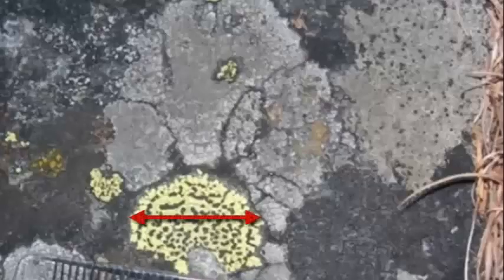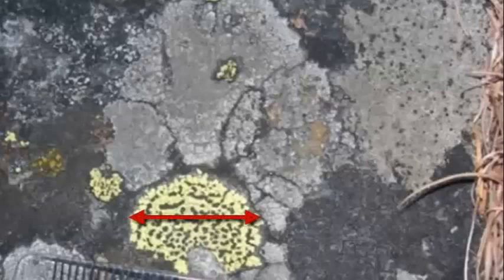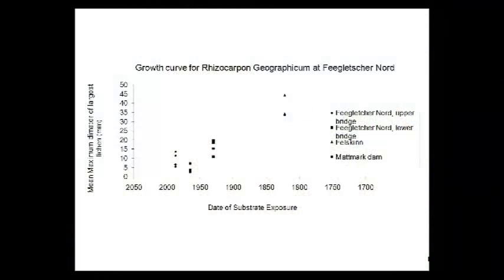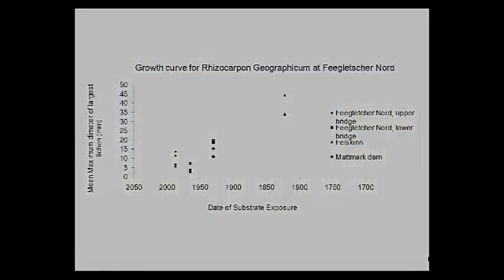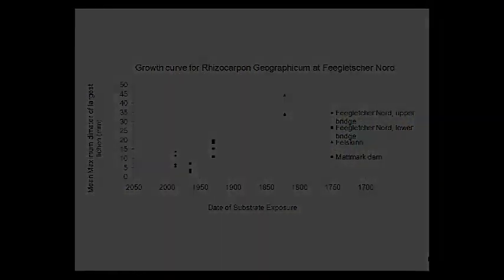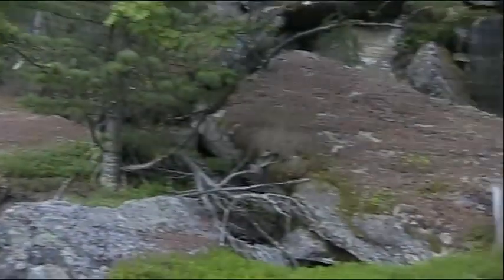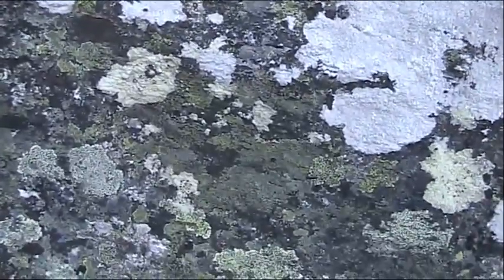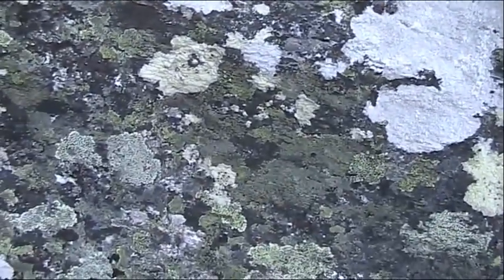The maximum diameter of the largest lichen is first established for surfaces of known age, for example gravestones or buildings, in order to calibrate the growth curve of diameter versus time. After calibrating a growth curve, the next step is to find similar lichens grown on substrate for the exposure to be dated.